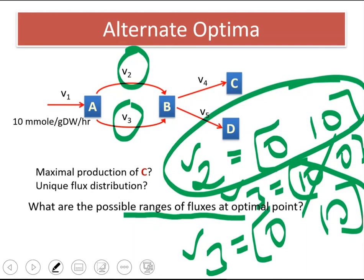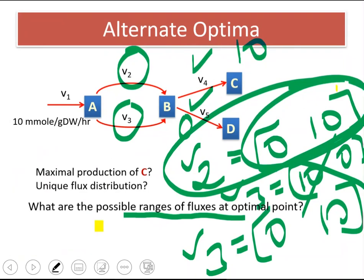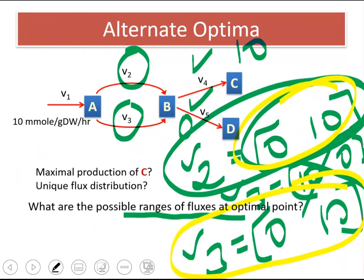So one way to report fluxes is, if there is alternate optima, to predict, to give possible range for those not fixed, not unique fluxes. V4 is unique. It will always be 10. V5 is unique. It will always be 0. But V2, we should report this range. And for V3, we should report again this range as the possible values of the rate of the corresponding reaction.